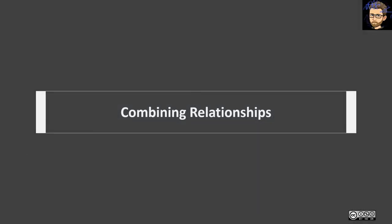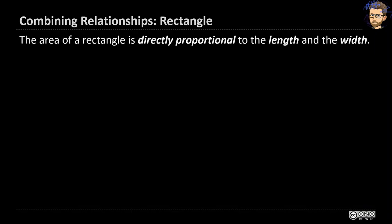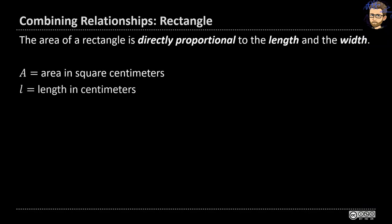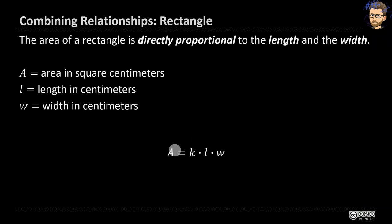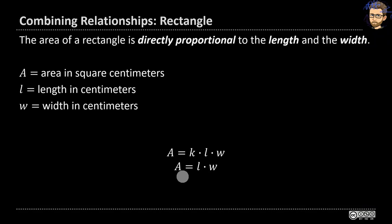You can combine these relationships for more complex statements. For example, the area of a rectangle is directly proportional to both its length and its width. Variables: A is area in square centimeters, L is length in centimeters, W is width in centimeters. A is directly proportional to L and to W. Since we're using consistent units, k equals 1, so A equals L times W. If you double the length, you double the area. If you double the length and triple the width, you increase the area by a factor of 6.